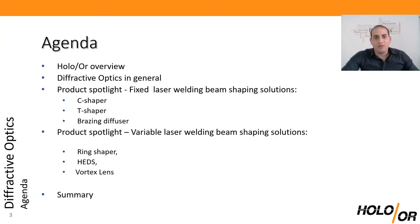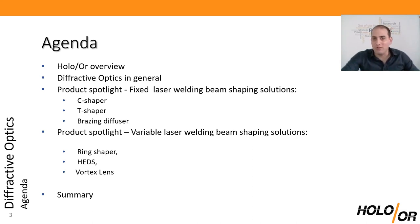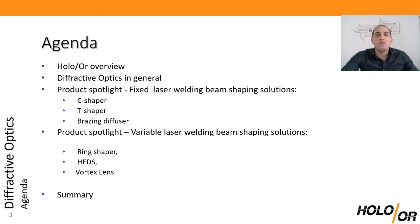The overview of my talk is that I will give a short overview of diffractive optics and Holor — what we do and who we are. Then I'll talk about how we can add value to welding and cutting applications using both fixed shaping approaches like our C-shaper, our T-shaper, and our brazing diffusers, and our new flexi-shaper concept where you can adjust parts of the intensity of the image or the distances between points by moving the DOE or the beam versus the DOE.